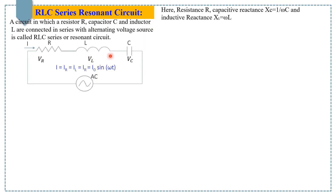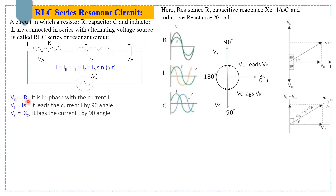Since all components are connected in series, the current in each element is the same. VR equals IR is the voltage across the resistor, where voltage and current are in phase. VL equals IXL is the voltage across the inductor, where voltage leads current by 90 degrees. VC equals IXC is the voltage across the capacitor, where voltage lags current by 90 degrees. XL is the inductive reactance and XC is the capacitive reactance.